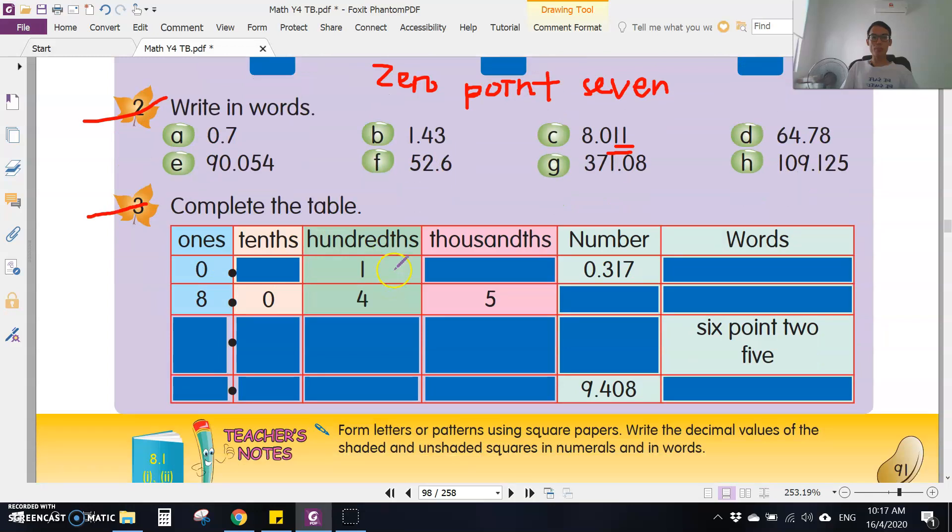Number three, you have to complete the table according to their place values. For example, this number is 0.317. The ones is zero, you can see the first number is zero. The tenths is the second number, which is three. The hundredths is one. The last one is the thousandths, the third digit is the thousandths. So 0.317: zero is the ones, three is the tenths, one is the hundredths, seven is the thousandths. Then you write the words: zero point three one seven.